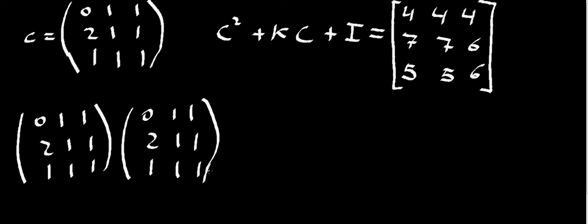The first element here is going to come from multiplying row 1 times column 1, so we're going to have 0 times 0, plus 1 times 2, which is 2, plus 1 times 1, which is 1, so it's 2 plus 1, which is 3.